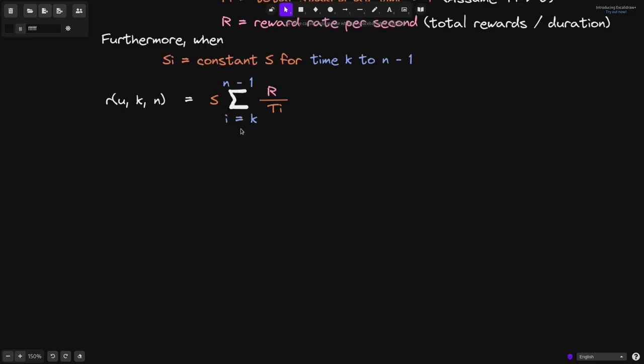Let's simplify this equation one more step. Notice that summing from i equals k all the way up to n minus 1 is the same as summing from i equals 0 all the way up to n minus 1, and then subtracting the terms all the way from i equals 0 to k minus 1.